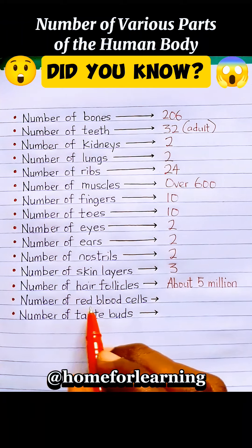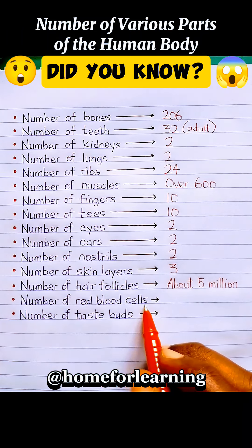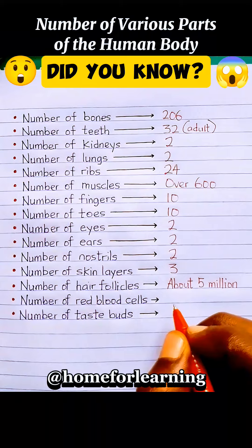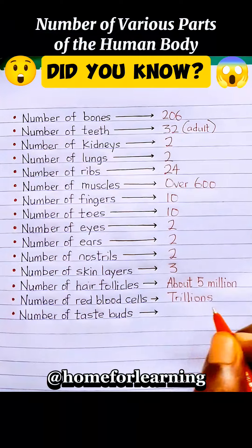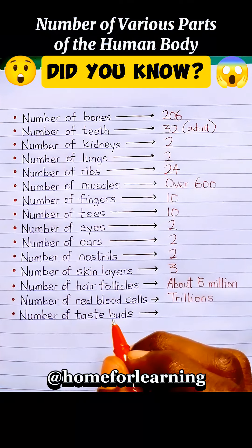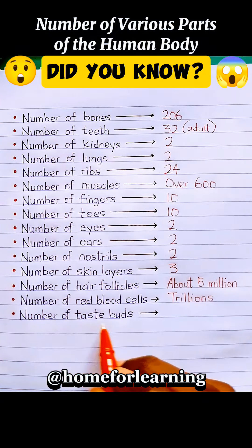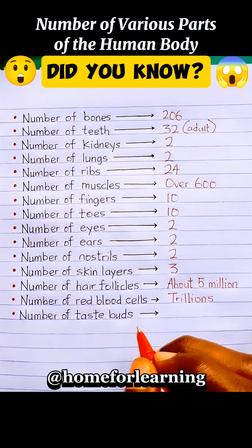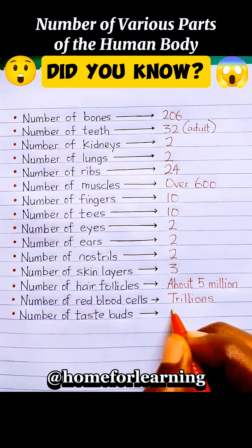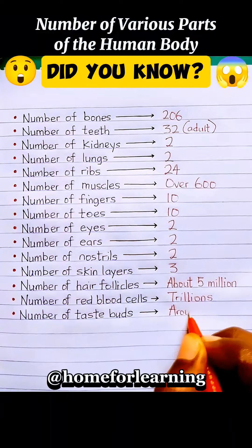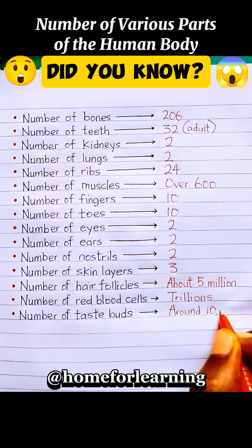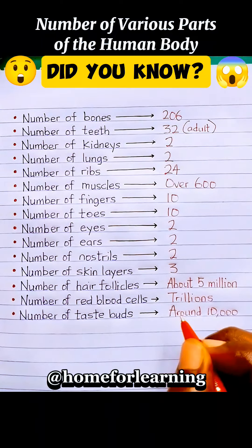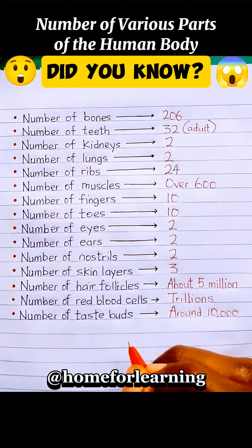Number of red blood cells: the number of red blood cells in the human body runs in the trillions. Number of taste buds: the number of taste buds in the human body is around 10,000.